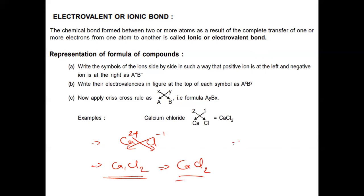Similarly, consider the second example, aluminium sulphate. Al³⁺ carries a 3+ charge and SO₄ carries a 2− charge. In the second step, cross-multiply the magnitude of the charge with the oppositely charged ions, giving Al₂(SO₄)₃. This is how we write the formula of an ionic compound.